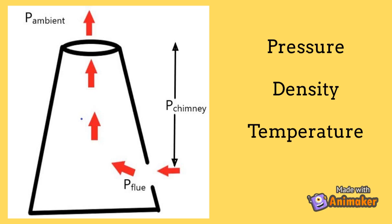Let us explore the root cause. The flue gas is generally the end product of some process — may be combustion, incineration, or some chemical reaction — so it is generally at a higher temperature compared to the ambient air. This temperature difference induces a difference in density between the flue gas and the ambient air, and because of this density difference, a pressure difference is created. This pressure difference is responsible for the flow of flue gas from the bottom part of the chimney to the topmost part, so that it can get easily dispersed with the atmospheric air.